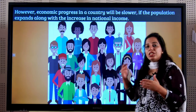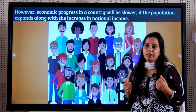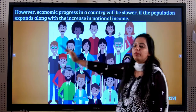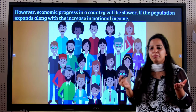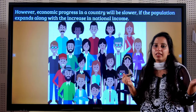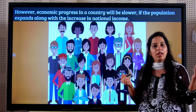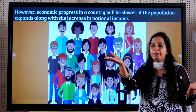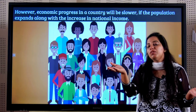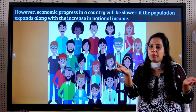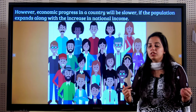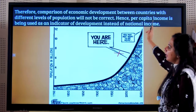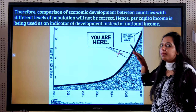Sometimes national income may increase, but we still don't say there is development. Why? Because there will also be an increase in the population of that country. For example, if your household income is 10,000 rupees and just two people are living there, you can live quite comfortably. But if there are 20 people living on that same 10,000 rupees, when population increases, development slows down. So comparing economic development between countries with different population levels is not correct.